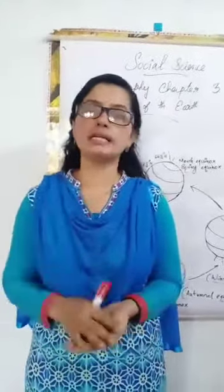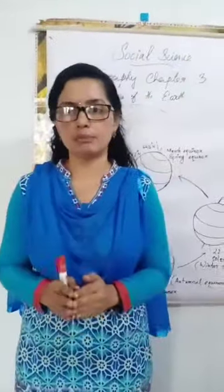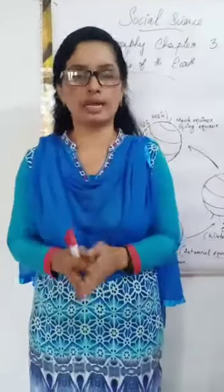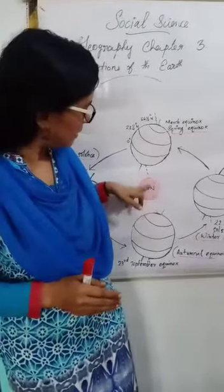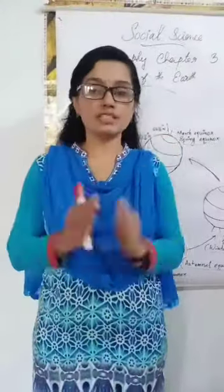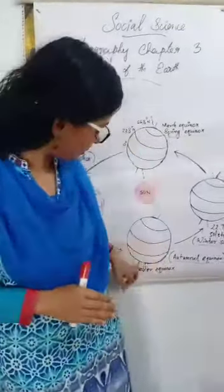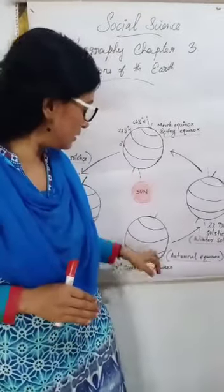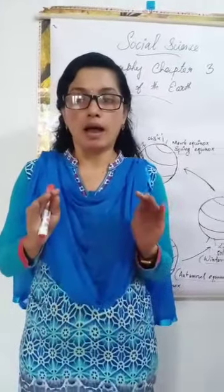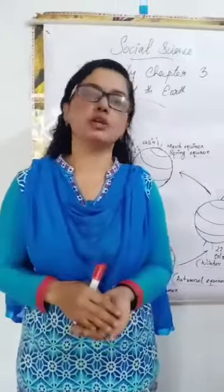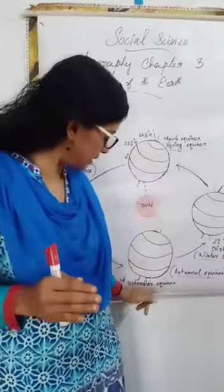On 23rd September, the Sun is overhead on the equator again, on the opposite side. On this day, the Northern Hemisphere has the Autumnal or Fall Equinox, while the Southern Hemisphere has the Spring Equinox.